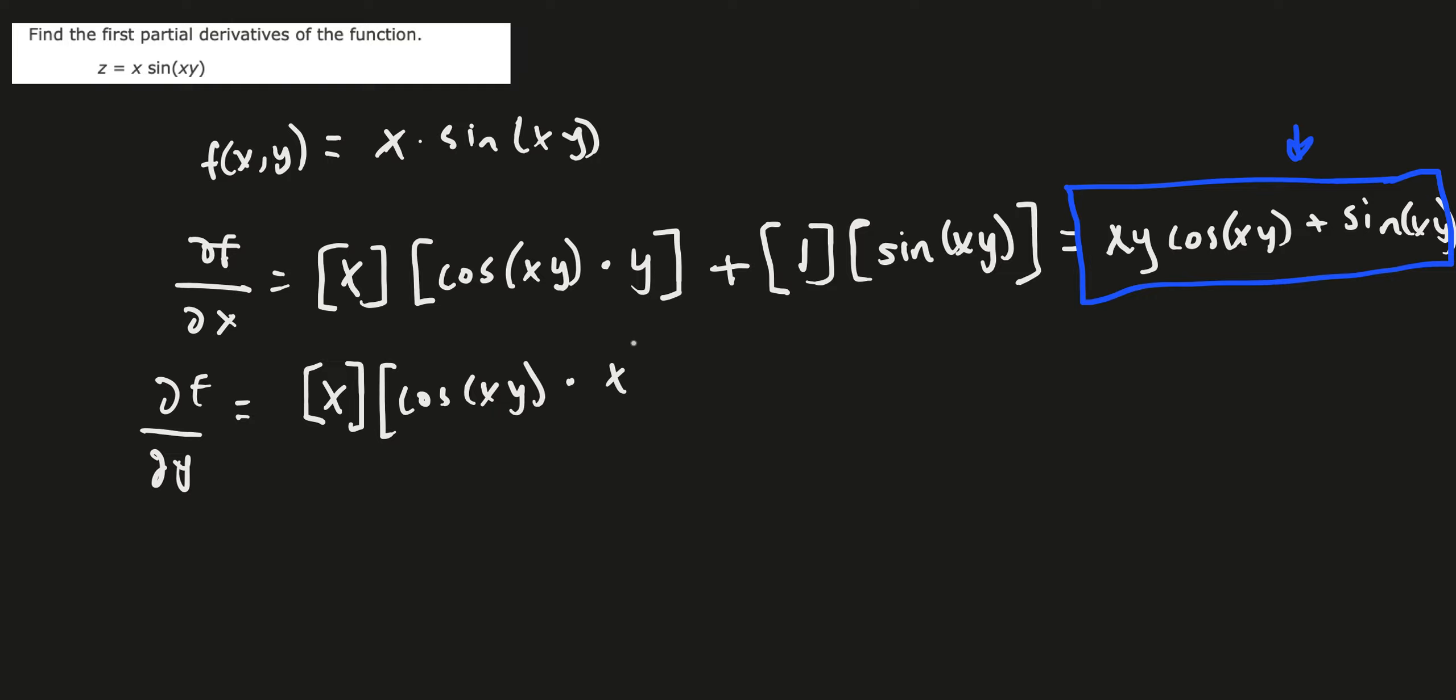It's just going to be x because y is your variable that you are taking the derivative with respect to. And so x is your constant, and so it's just going to be x because the derivative of y is 1. x squared times cosine of xy ends up being your solution to this problem. And that is all you need to do for this problem.